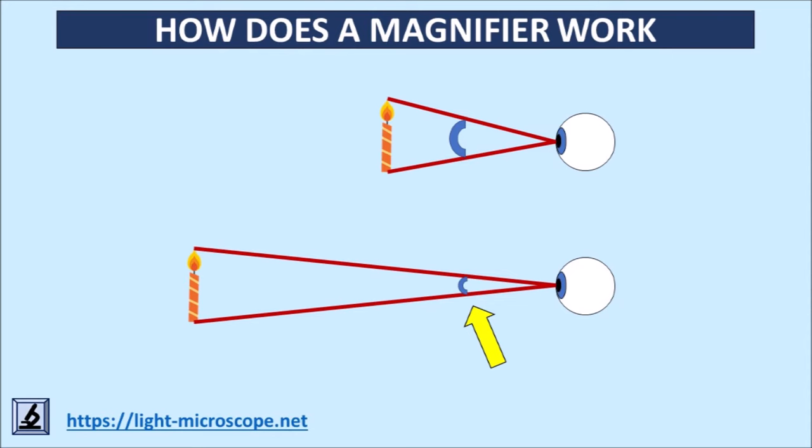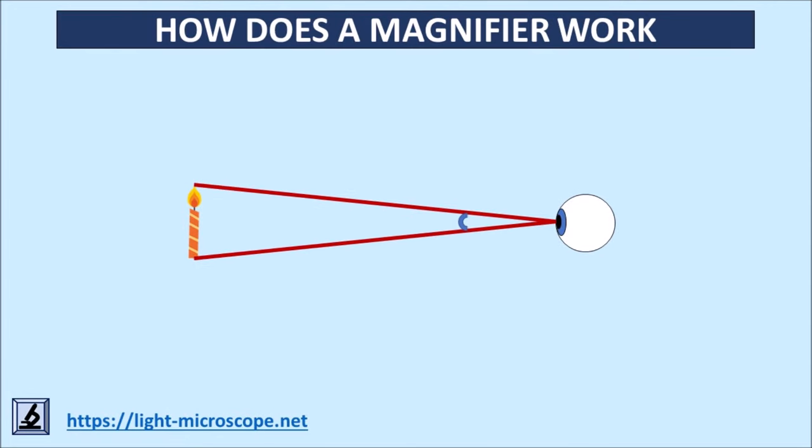So the rule is, the larger the angle, the larger we perceive the object. Here you can see again how the angle changes when changing the distance of the object to the eye.